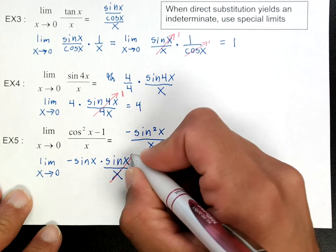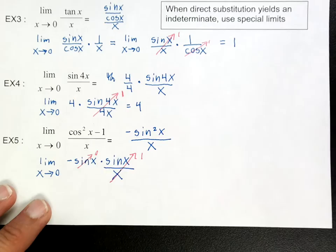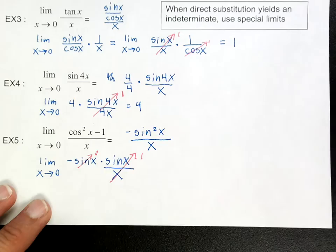And if I look at my special trig limits, this is going to be 1. Now as I plug in the 0, the sine of 0 is 0. So all of this becomes a 0. So I've got 0 times 1, which is 0.